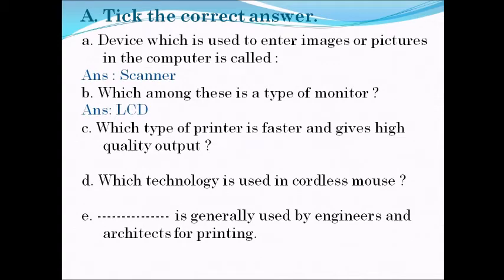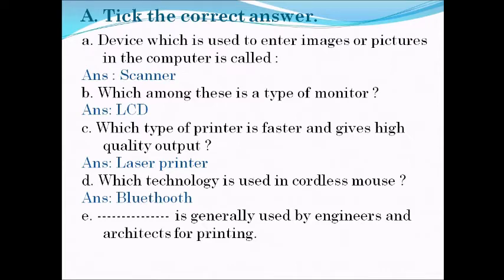Next: which type of printer is faster and gives high quality output? The answer is laser printer. The laser printer is faster and gives high quality output. Next: which technology is used in a cordless mouse? The answer is Bluetooth technology.